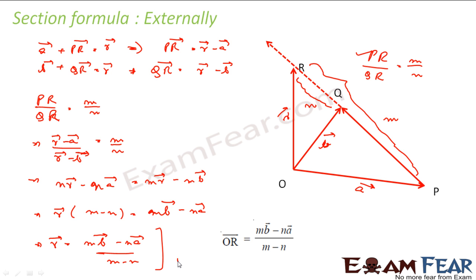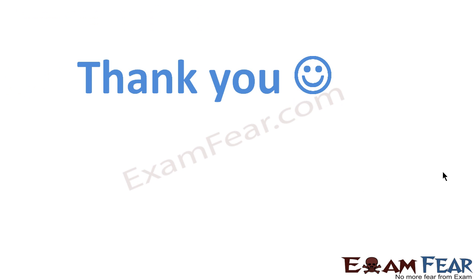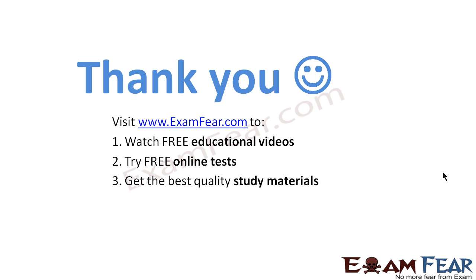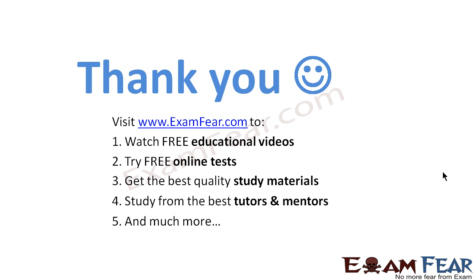And that is the answer for external division — easy to prove. I used the same approach: PR by QR equals M by N, found the PR and QR vectors, substituted, and solved. Thank you. Visit examfear.com to watch free educational videos, try free online tests, get the best quality study materials, study from the best tutors and mentors, and much more. Thanks once again.